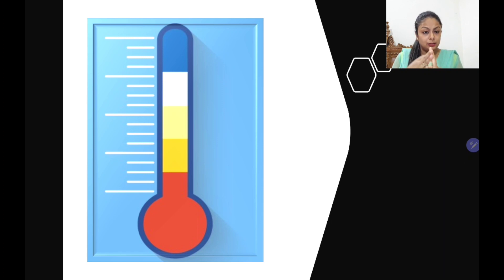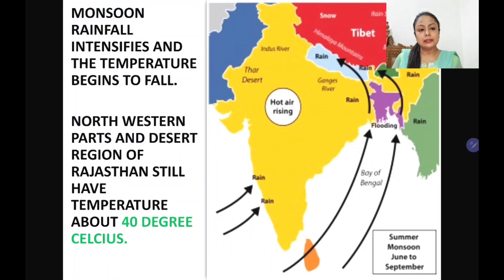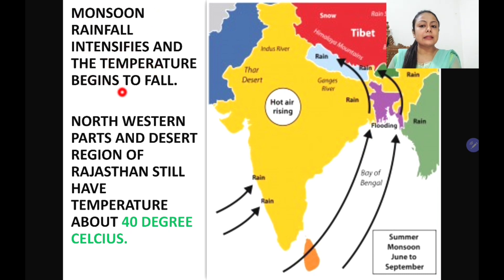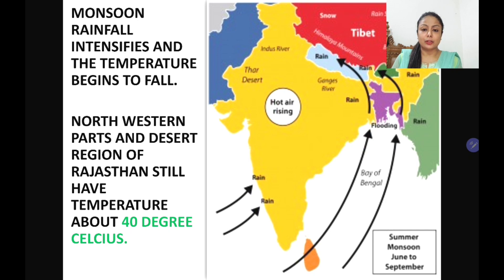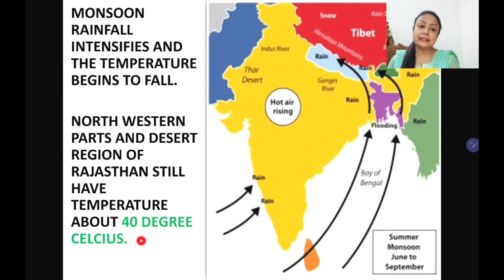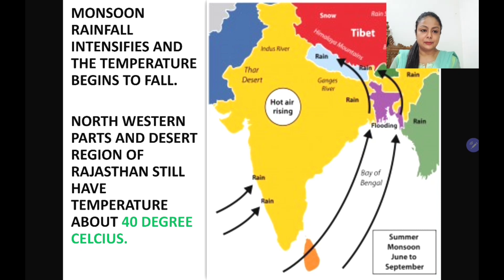We will take up the temperature condition, pressure, winds, and we will also learn about the precipitation - that is rainfall. So let's start with the temperature condition during the rainy season. As soon as the rainfall starts, the temperature begins to fall. There is some modification in the weather condition. The northwestern parts and the desert region of Rajasthan still have temperature about 40 degrees Celsius during the rainy season.